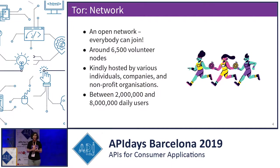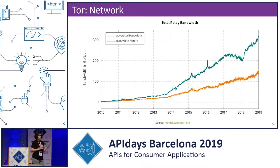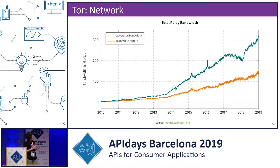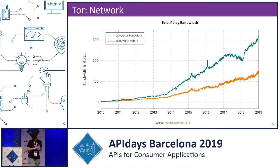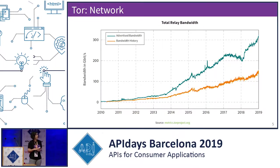We have between 2 million and 8 million daily users. With this graph you can see the current bandwidth available in the network. The top line shows that we're currently offering 300 gigabits of bandwidth per second, and the bottom line shows the actual usage of the network currently. We are at around 50% capacity — about 150 gigabytes per second usage.